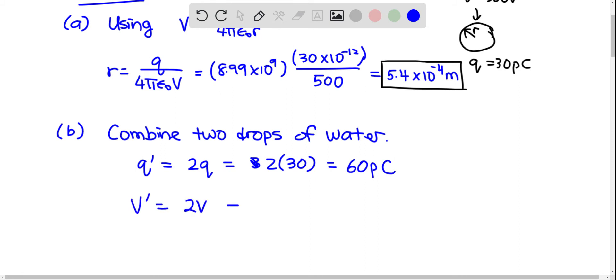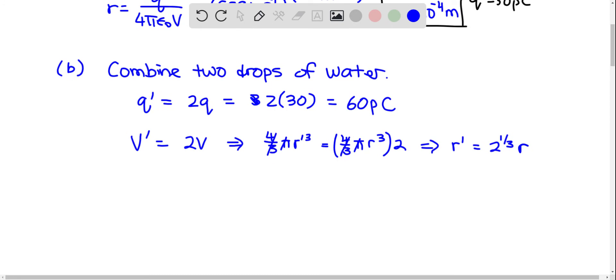This means that 4 over 3 pi r prime cubed is equal to 4 over 3 pi r cubed times 2. So we can cancel the 4 over 3 pi, and then r prime is 2 to the one-third r. So this is the volume.